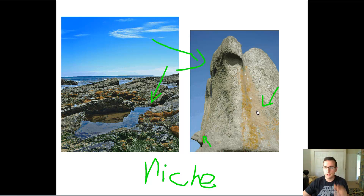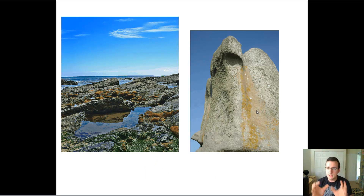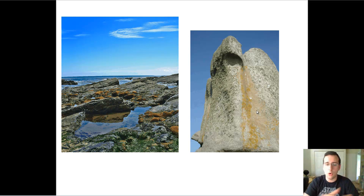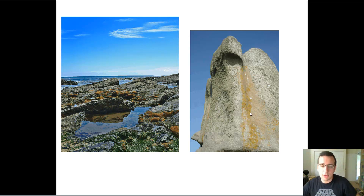By the way, we're talking about lichen here. Lichen is a mutualistic relationship that exists between a fungus and algae — it's really two organisms together. Regardless, this lichen that lives in the front or on the side is fighting for its role in the ecosystem, fighting for its niche.